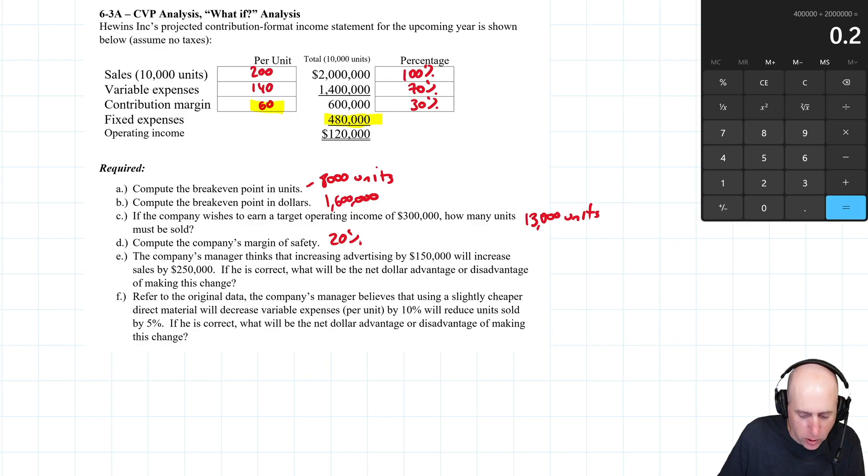That was the first part. Those were all just calculations we learned in problem 6.1 and 6.2. What we add to it is we are going to redo our income statement a couple of different ways because having variable and fixed expenses split out allows us to test: what if this happened? What if that happened?